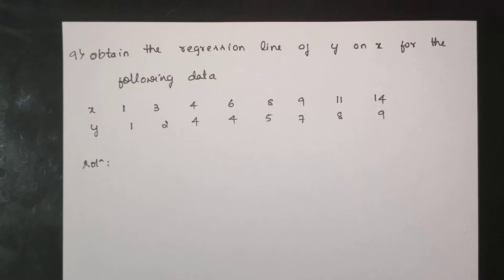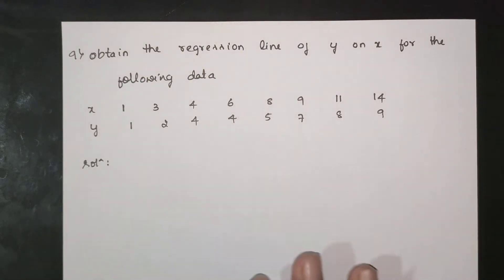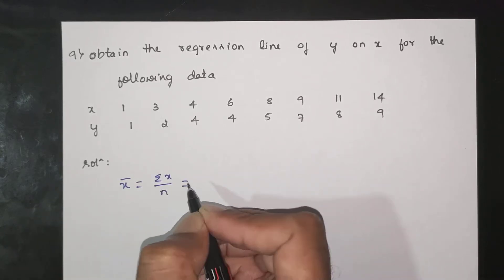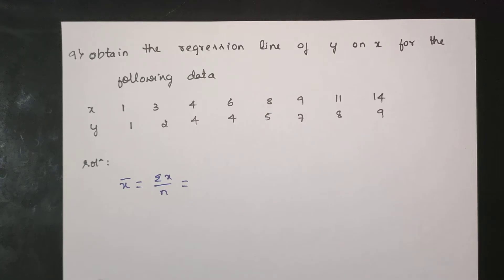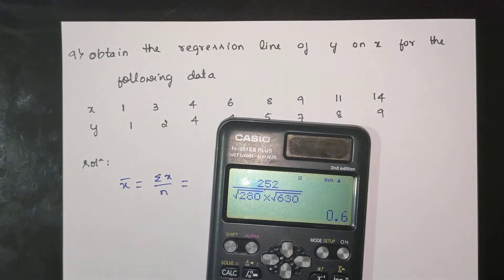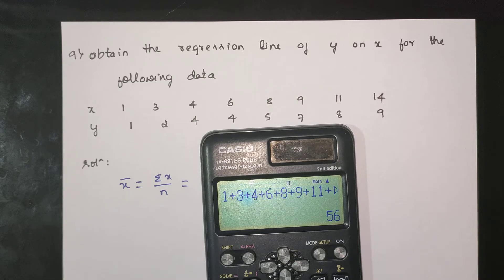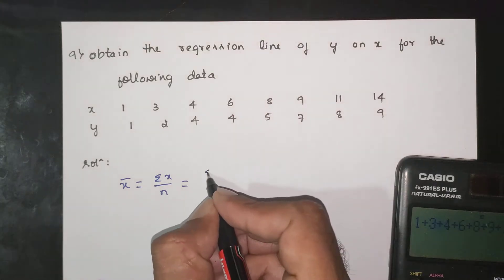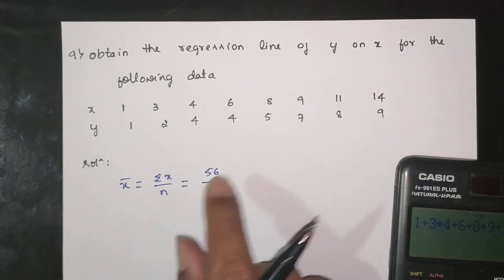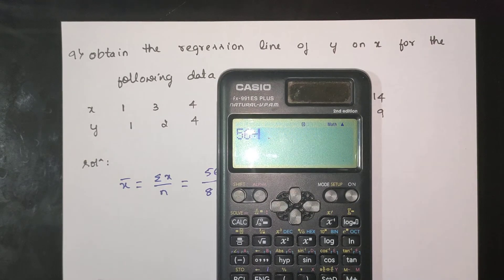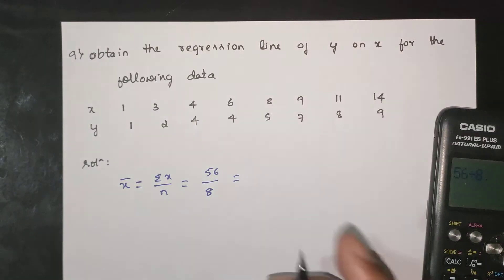This is the regression line of y on x. First, find x̄. Summation of x: 1 + 3 + 4 + 6 + 8 + 9 + 11 + 14 = 56. n = 8. So x̄ = 56 divided by 8 = 7.